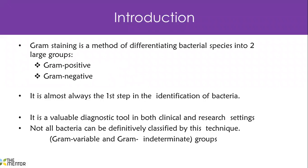Gram staining is a method that differentiates bacteria into two main categories — Gram positive and Gram negative. It is the very first step in identification of bacteria when samples are taken, whether swabs, sputum, or blood. The first test done for bacteria is Gram staining before moving on to other specialized diagnostic tests. It is very valuable both clinically and in research. Clinically, we identify whether you are suffering from a Gram positive bacteria so we know which antibiotic — one sensitive to Gram positive or a broad-spectrum one — to give you.